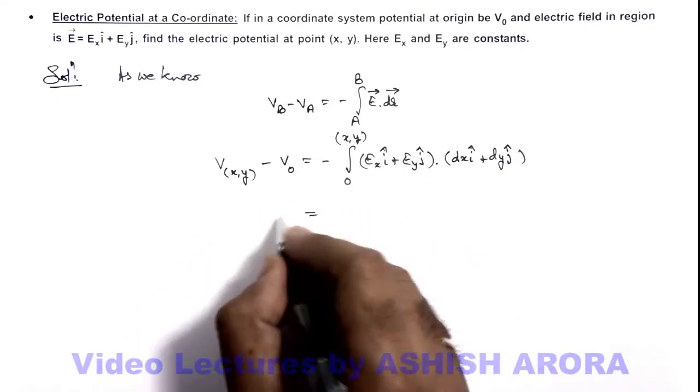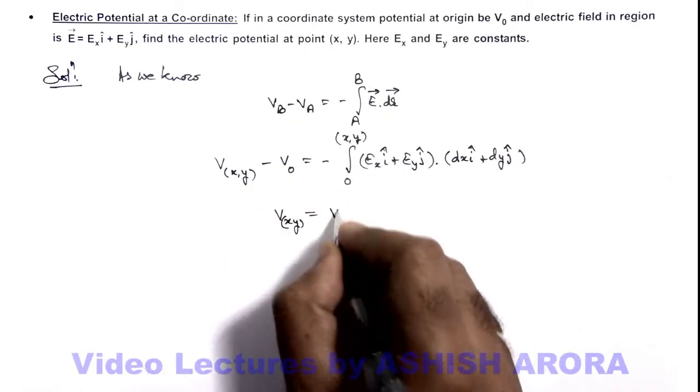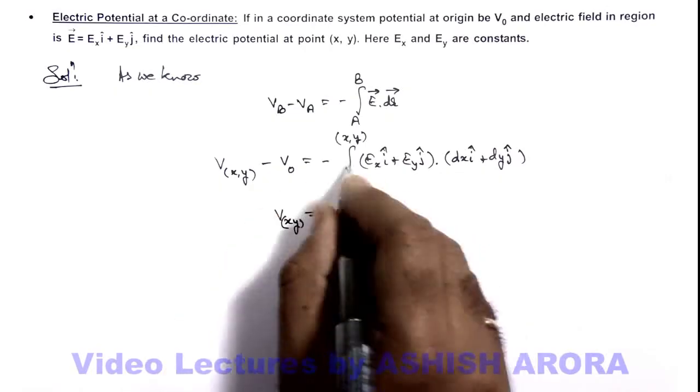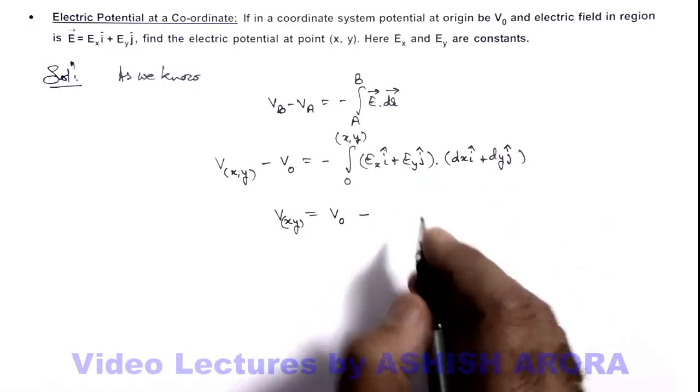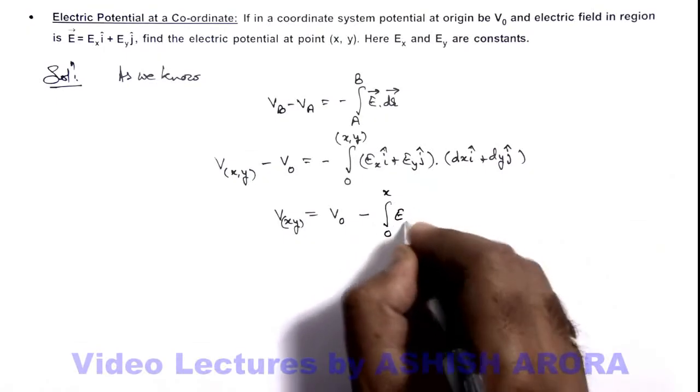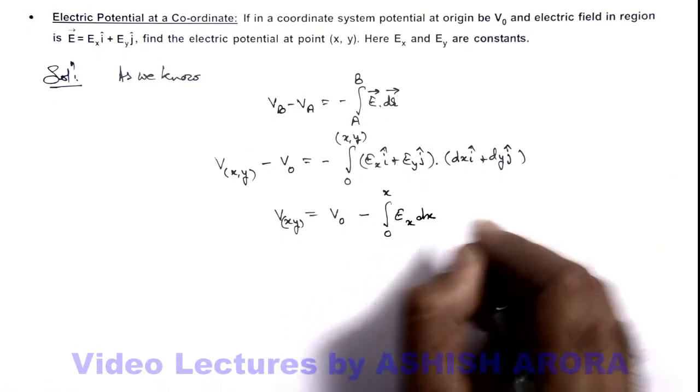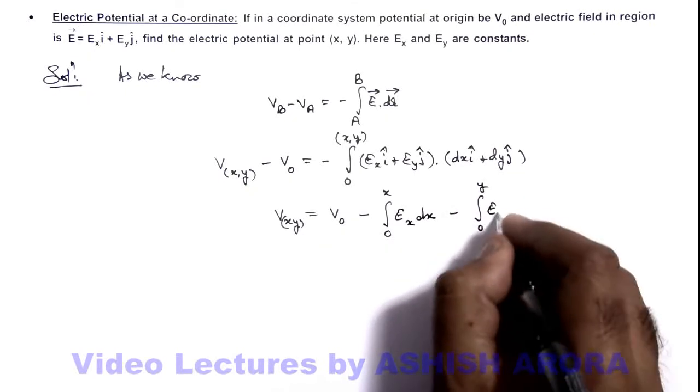So on further analyzing here we get V(x,y) at a general coordinate is equal to V₀ minus this expression. If we take the dot product correspondingly, this will give us integration from zero to x, this will be Ex dx, minus integration from zero to y, Ey dy.